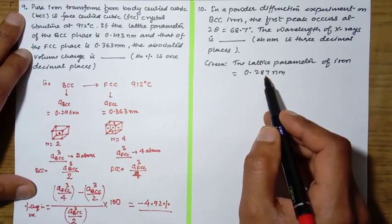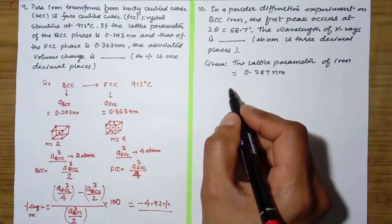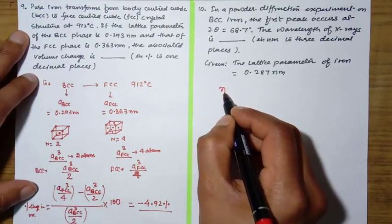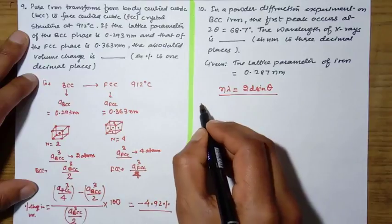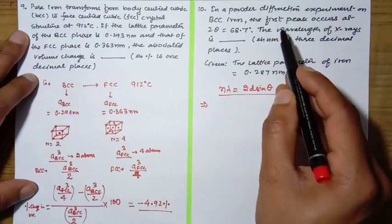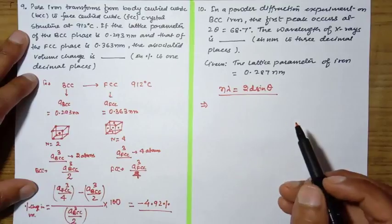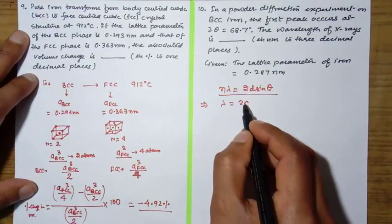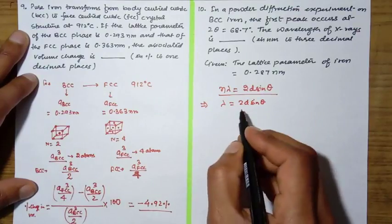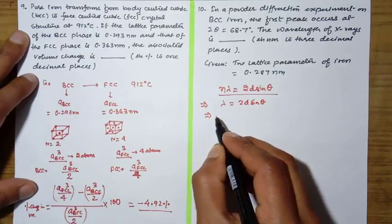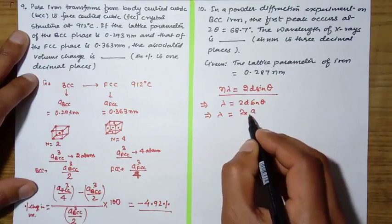We know the formula: n·λ = 2d·sinθ, so we need to apply this formula. Since nothing is mentioned about the order, we consider it as first-order diffraction. We need to calculate λ = 2d·sinθ, where the interplanar distance d = a / √(h²+k²+l²) for the plane hkl.